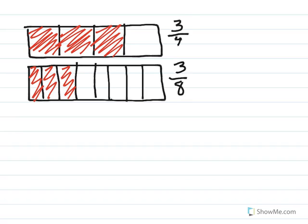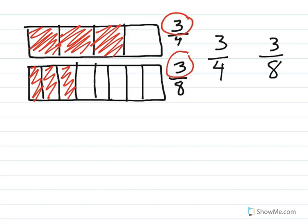So here we have the same numerators — three and three. The difference here is our denominator. On the first fraction I have four as the denominator, that means that my whole is broken up into four equal pieces. In my second one I have eight as a denominator, that means it's broken into eight equal pieces. So when we have three-fourths and three-eighths we want to see which one is greater, which one is less. I know that if I take my whole piece and divide it into four pieces, those pieces are going to be bigger than if I have to divide it into eight pieces. In any fraction, the more pieces you have to split it into, the smaller they become. So here three-fourths is greater than three-eighths.